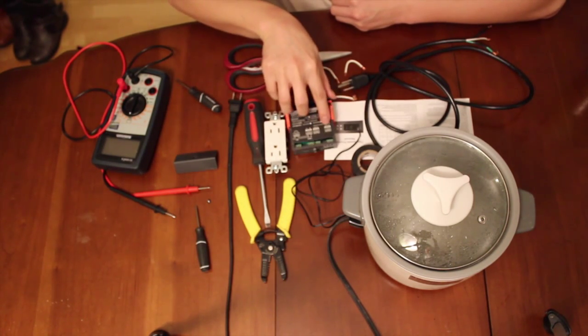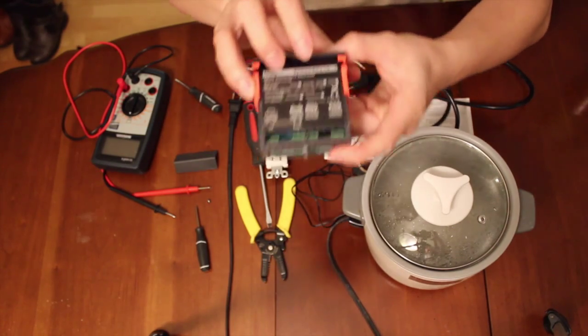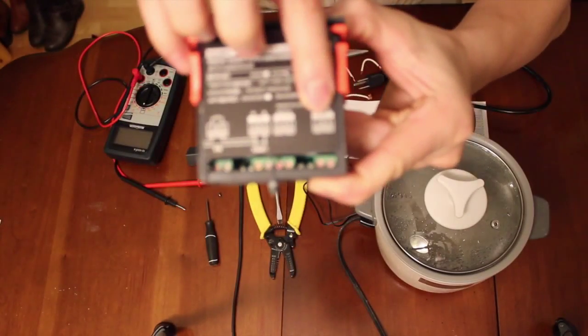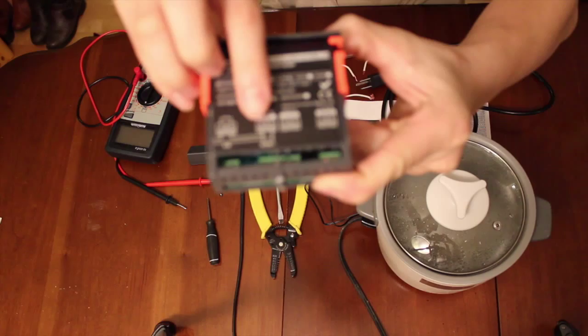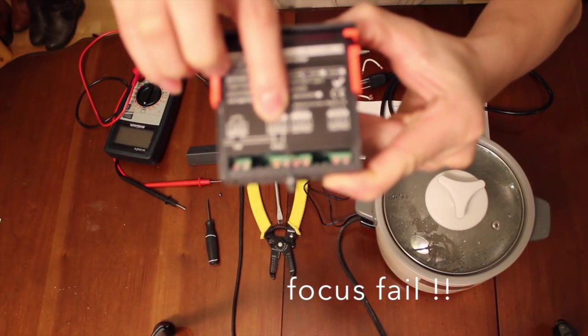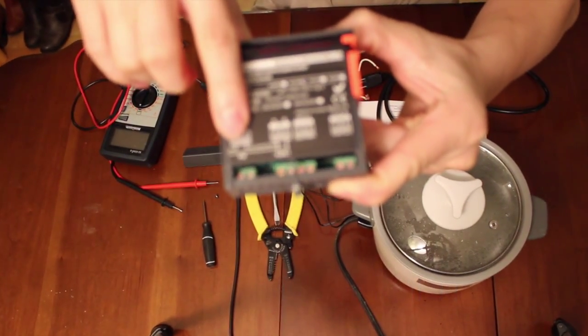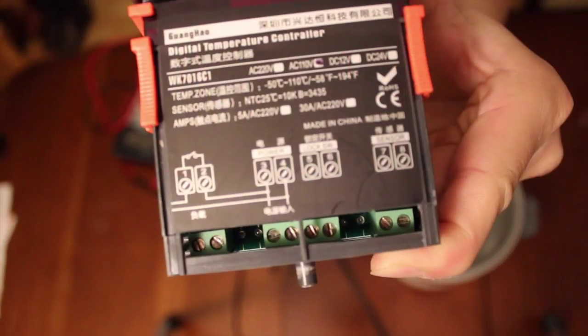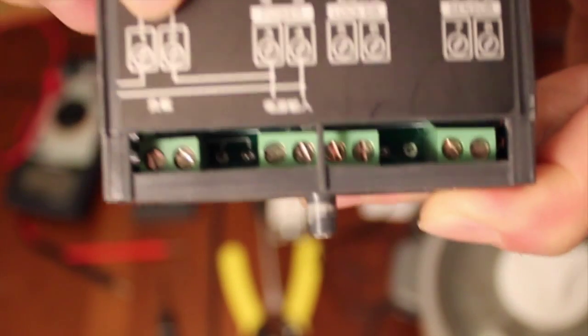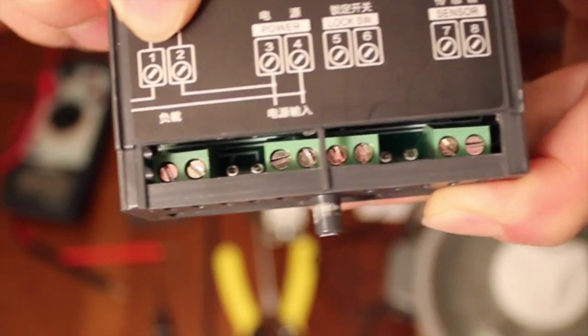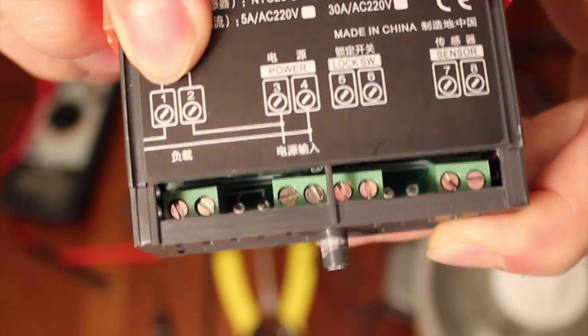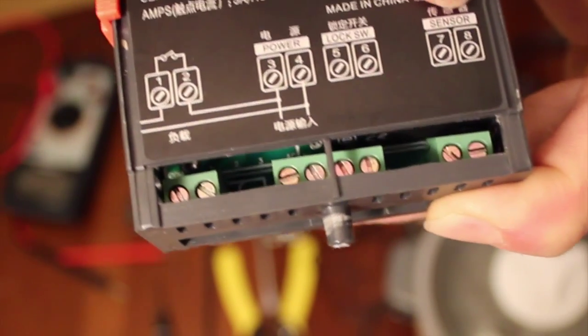We put that in here, into the center, then we connect power to this device, then we connect the power of the rice cooker, and then the switch here will switch the rice cooker on and off depending on the temperature that's measured inside the rice cooker.